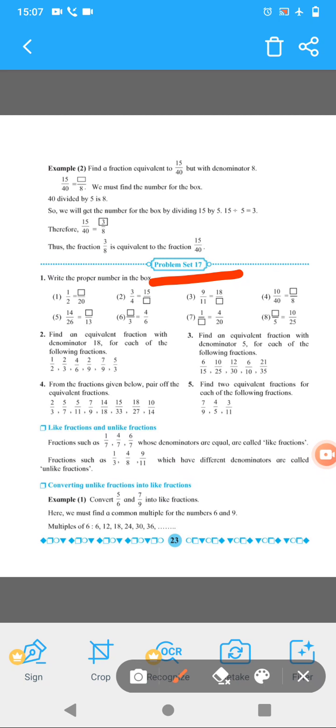Okay students. So now see the problem set 17. So one example, the first one example this. 1 upon 2 is equal to - okay? So denominator is 20. Numerator we have to find.